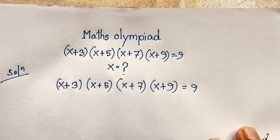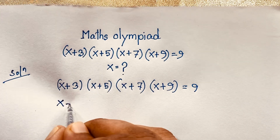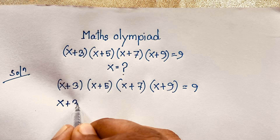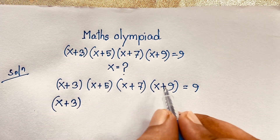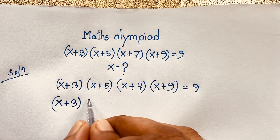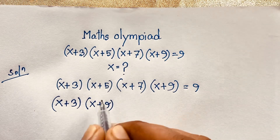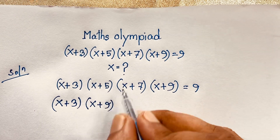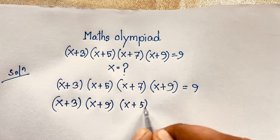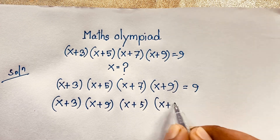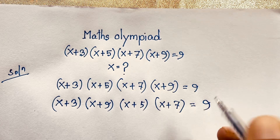Now, this expression — I regroup it as (x+3) times (x+9), and (x+5) times (x+7), which is equal to 9.